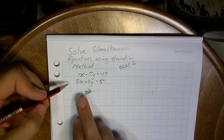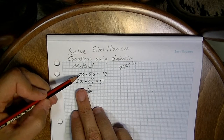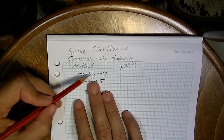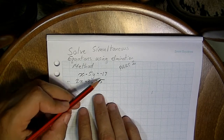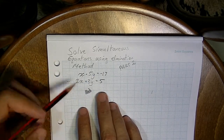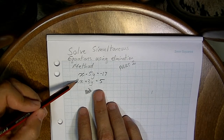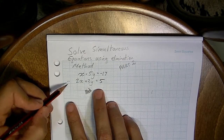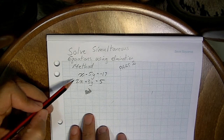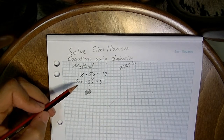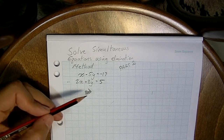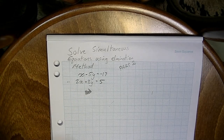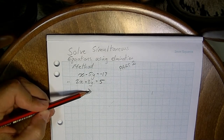If I add these together, I'm going to get x plus 2x, which is 3x, and then negative 5y plus 3y, which gives me negative 2y — that's not going to eliminate x or y. If I subtract one from the other, x minus 2x gives me negative x, and negative 5y minus 3y gives me negative 8y. Again, that's not going to eliminate anything — I'll still have x's and y's.